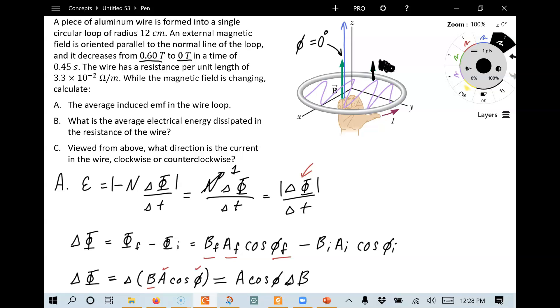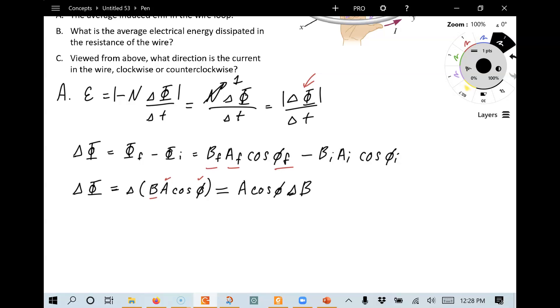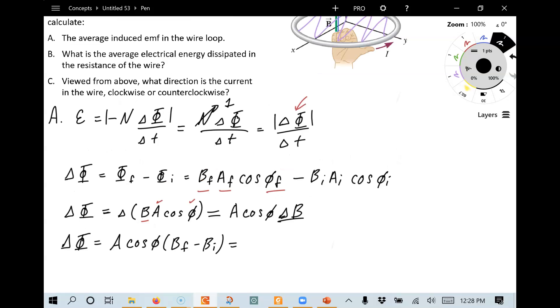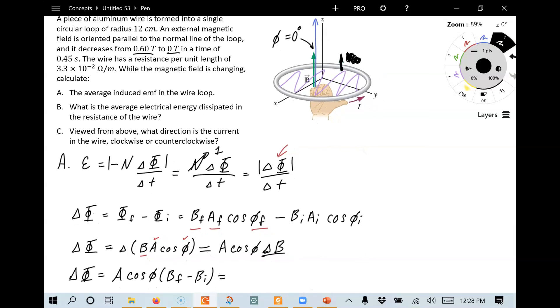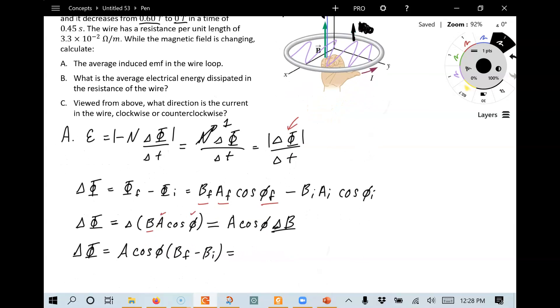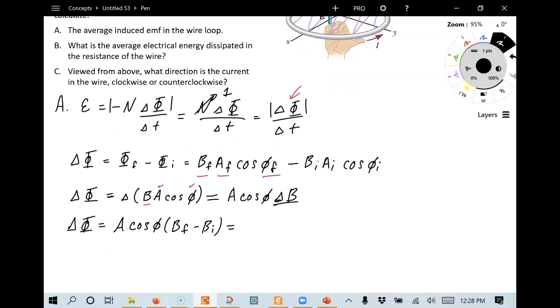I'm going to go ahead and use that second way of doing it. So if we use that equation, in this case, we're going to have delta phi equals the area of the loop cosine phi. And now delta B, that's going to be B final minus B initial. And so we need to put the numbers in here. So the area of the loop, it's got a radius of 12 centimeters. So we're going to have pi times 0.12 meters squared. That's our area.